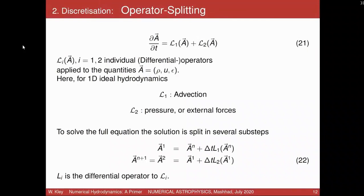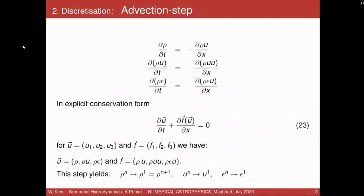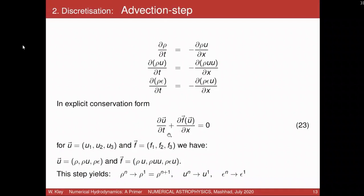I just talked about the operator splitting method, and we will start with the advection term L1. If you only look at the advection part of the hydro equations in 1D, we can see the following structure: on the left-hand side we have the time derivative of the density, momentum density in the x direction, and energy density. On the right-hand side we have only the advection terms, which are always proportional to the fluid velocity U.